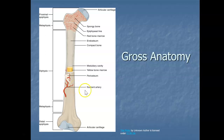The ends — the epiphyses — are typically filled with spongy bone. So the shaft is compact bone and the ends are spongy bone. That is where your red bone marrow fills the spaces in between the spongy bone. Red bone marrow is where your blood cells are made.